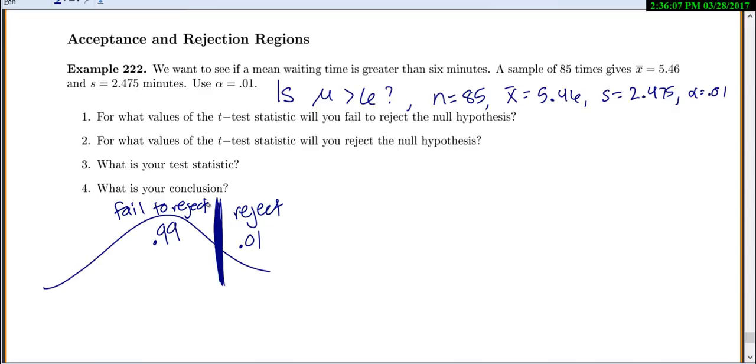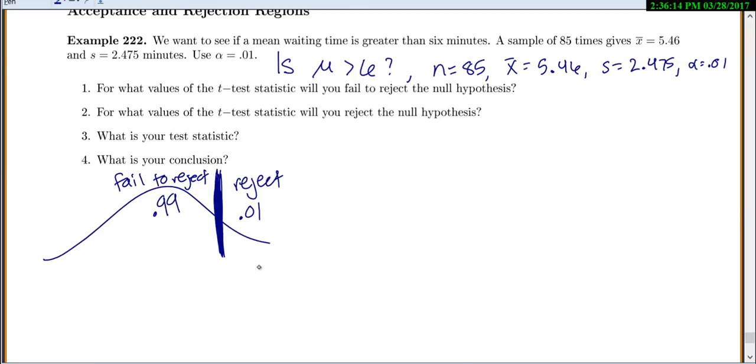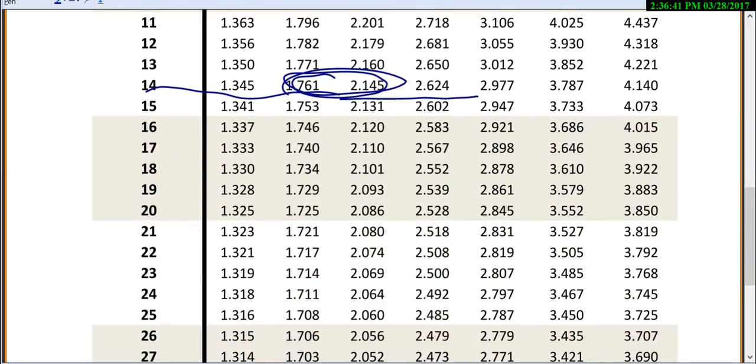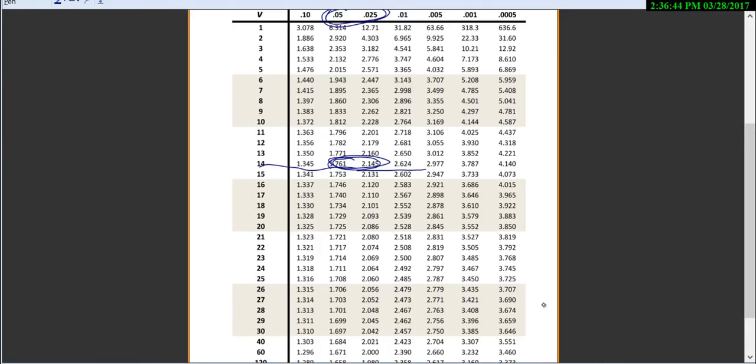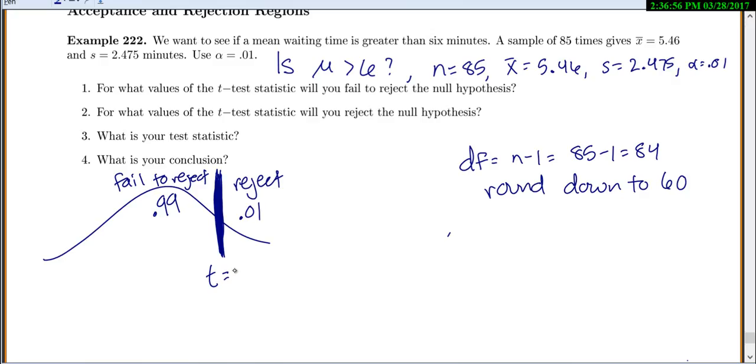So remember, acceptance and rejection regions are just telling you where we're going to reject or fail to reject. It's finding that cutoff point. To find that, we'll also need to know our degrees of freedom to use the t-table. So n minus 1 is going to be 85 minus 1 is 84. And to use our table, we'll have to round down to 60. So let's go to our table. We're looking for what t-value is going to be right here for that cutoff. So 0.01 on the right. So 60 degrees of freedom. And we're looking for 0.01 on the right. Looks like the t-value that cuts that in those two pieces is 2.390. So t equals 2.39.